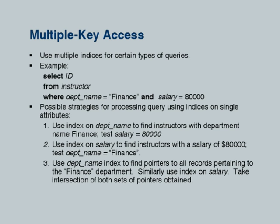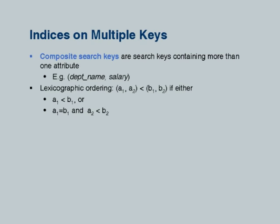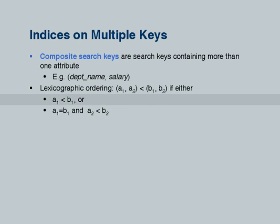If I have a search tree on (department name, ID), I can handle queries like 'department name = CS' by turning them into a range query on (department name, ID). A composite search key is ordered lexicographically: (a1, a2) is less than (b1, b2) if either a1 < b1, or a1 = b1 and a2 < b2. This section on multiple-key access explores this further, but for lack of time I will skip it.